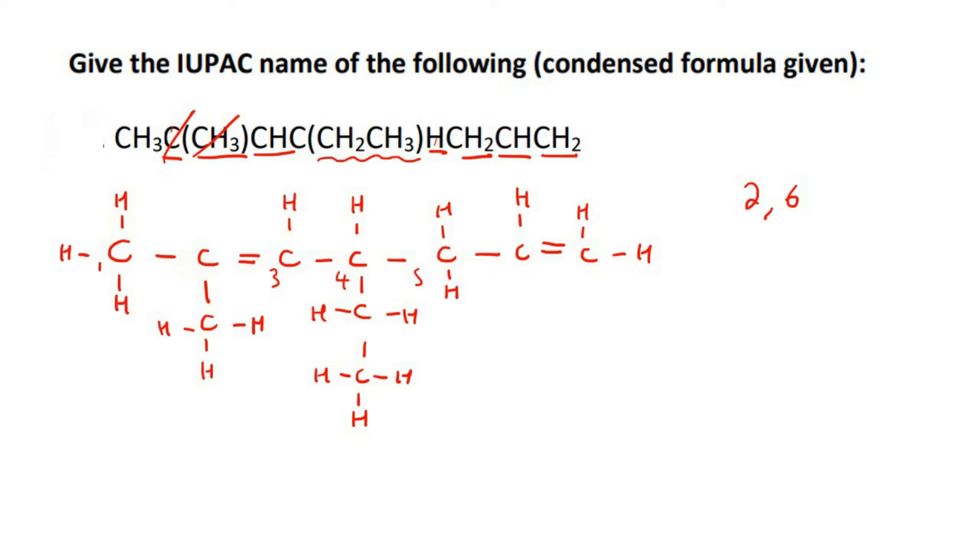...then your double bonds would be on carbon number 1 and carbon number 5. We would rather choose that because we want the lowest numbers possible. That's the IUPAC rule, right? So we're going to label from the right-hand side.